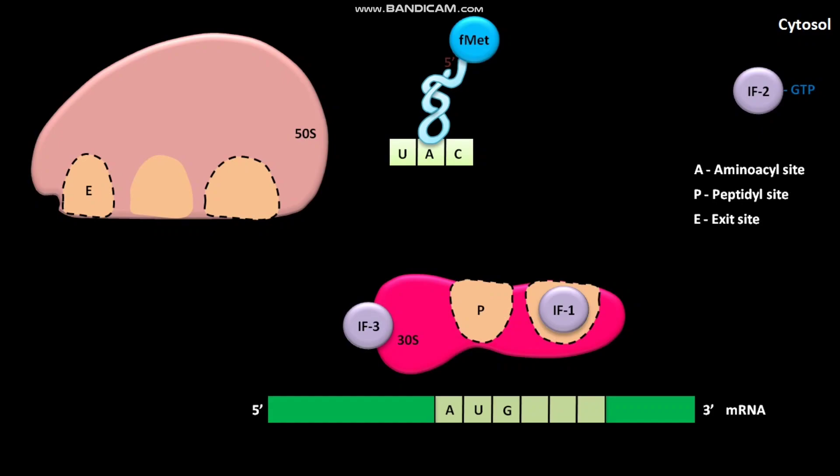The 5' AUG is the initiation codon on the mRNA. 8 to 13 base pairs upstream to the initiation codon, Shine-Dalgarno sequence is present. The Shine-Dalgarno sequence is a consensus sequence of 4 to 9 purine residues. The Shine-Dalgarno sequence guides the 5' AUG to its correct position during the binding of mRNA to the 30S subunit.